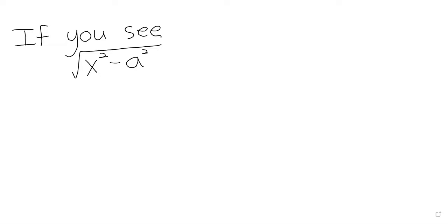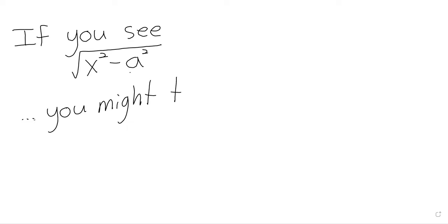Last time it was the square root of a squared minus x squared, and if you see this, you might try letting x be a sine theta. The difference between this and what we did yesterday is the order that we're subtracting in. If you see x squared minus a squared under a square root, you might try letting x be a times the secant of theta.